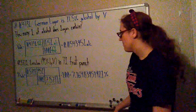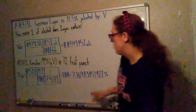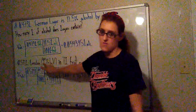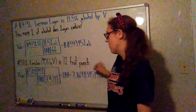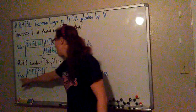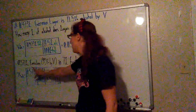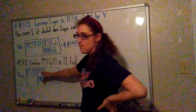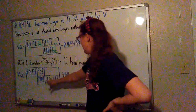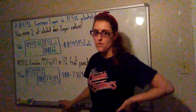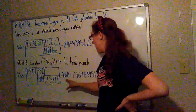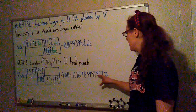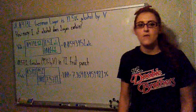Now, percent by volume. Let's say we go to a party with fruit punch: 0.571 liters of Everclear, which is 95% by volume, and 7 liters of fruit punch. The percent alcohol would be 0.571 liters of Everclear times 95 liters of alcohol per 100 liters, divided by 7.571 liters total volume, multiplied by 100, which equals 7.16483951921%. Thank you and I hope you enjoyed.